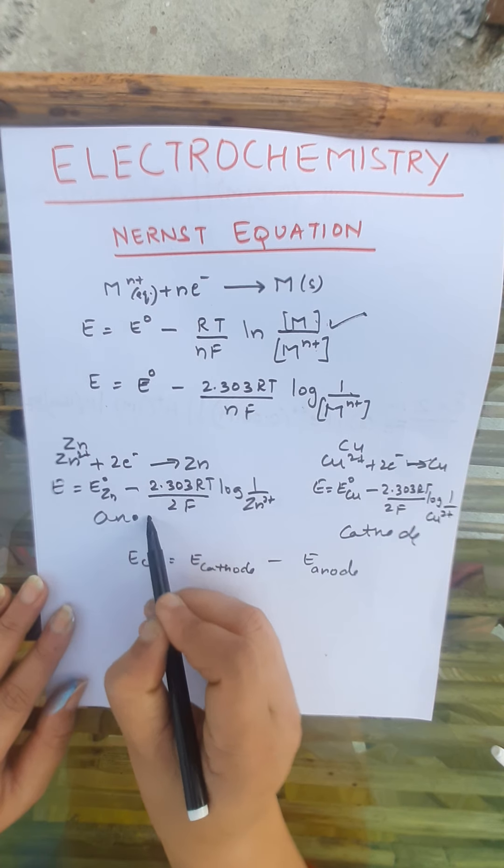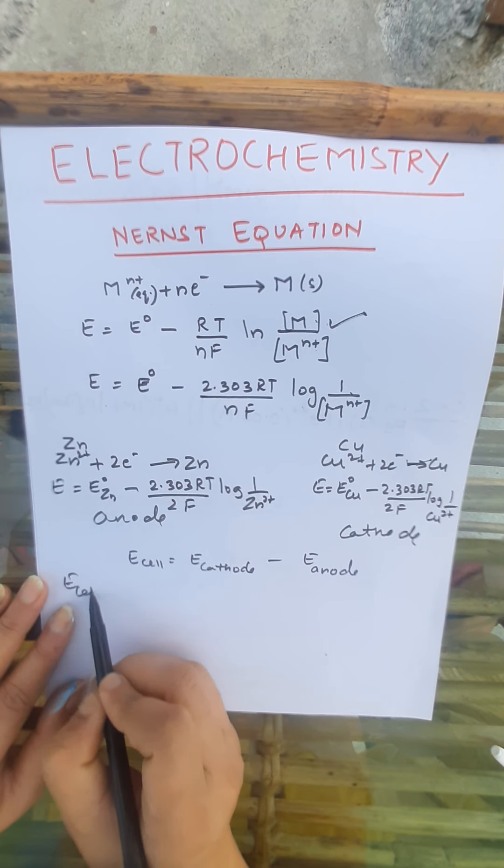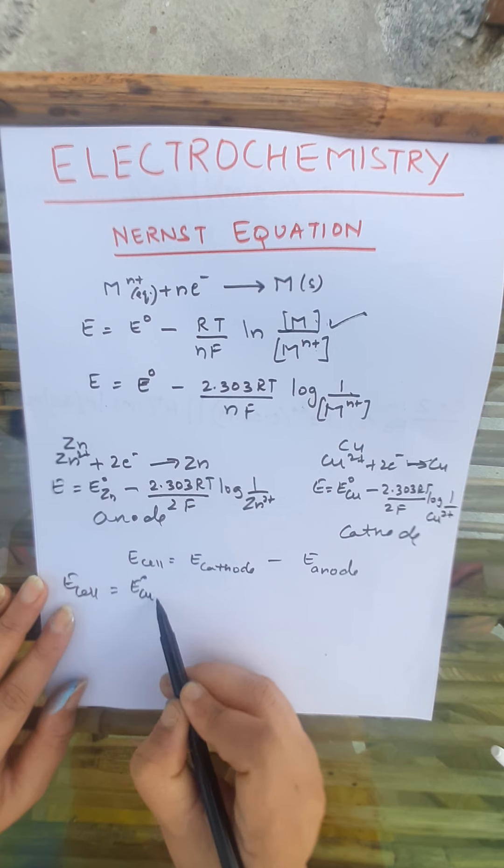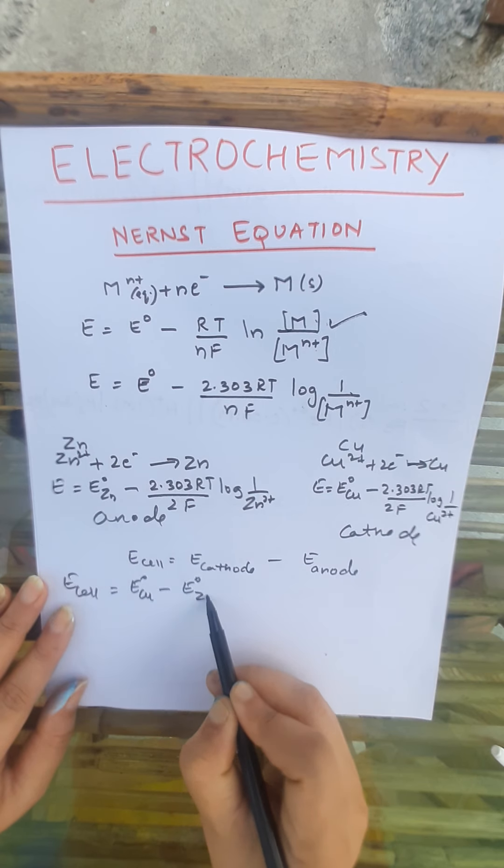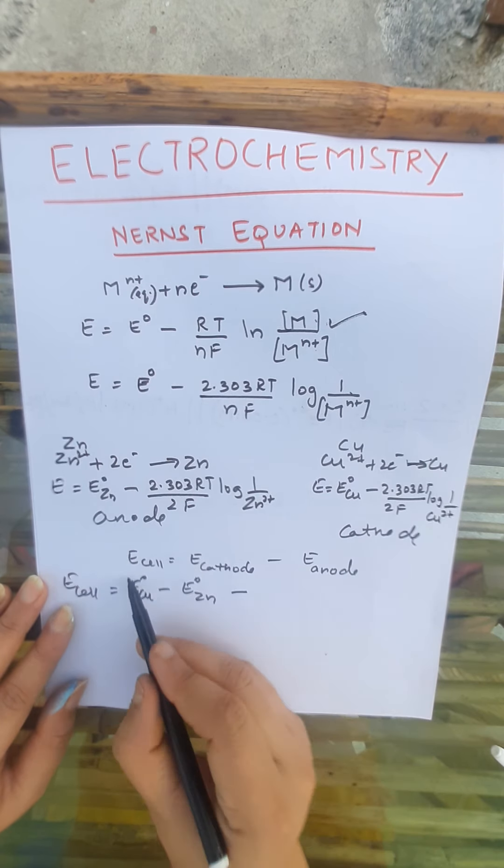Now if we want to calculate the cell potential — not electrode potential, but cell potential — we take E(cathode) minus E(anode). Copper is the cathode and zinc is the anode. So E(cell) = E°(Cu) minus E°(Zn), and the log term becomes 2.303RT/2F times log([Zn²⁺]/[Cu²⁺]).